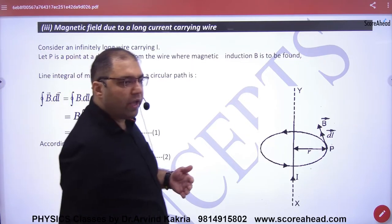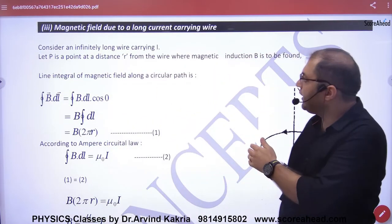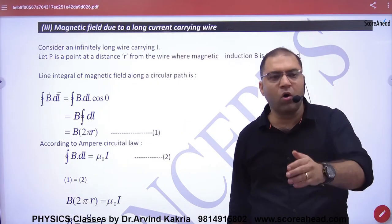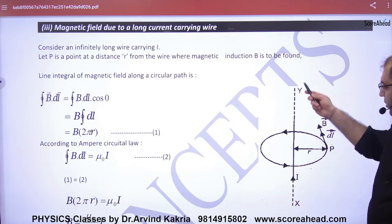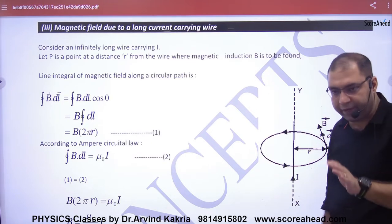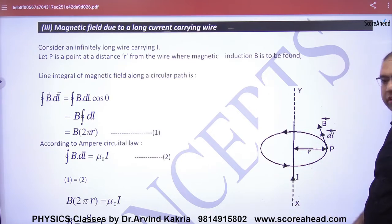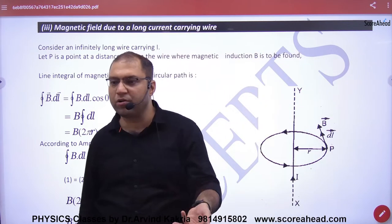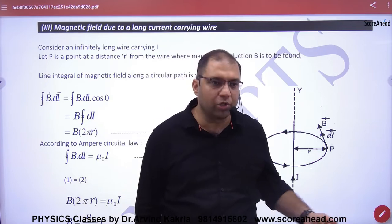Next application of Ampere's Circuital Law: magnetic field due to a long current-carrying wire. This is an infinite wire and you have to find the field at a distance. Everyone knows what is its value: B = μ₀/4π × 2I/r. Why?